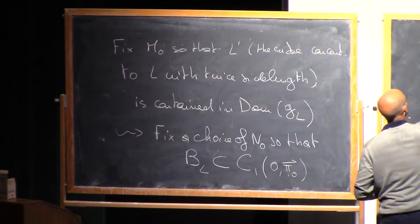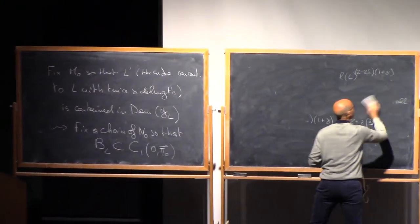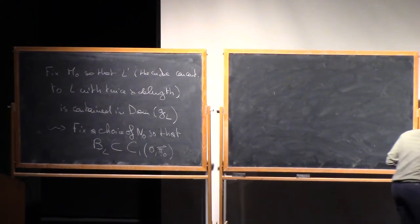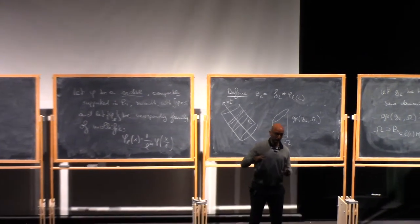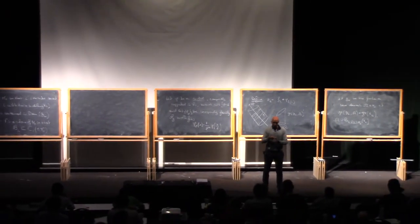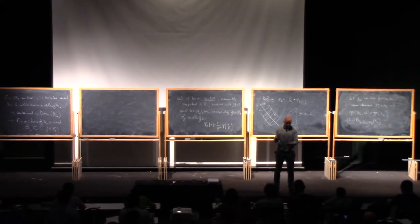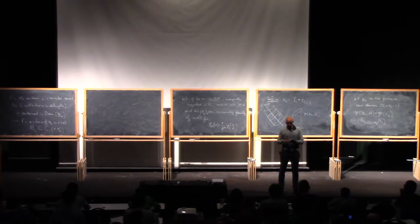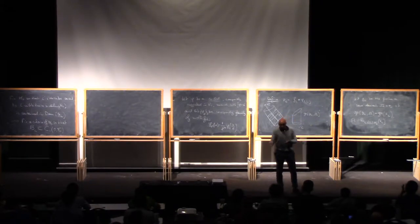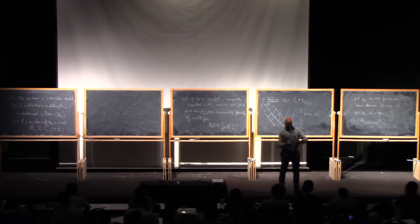So now, what do I do? I have these functions G_L, which are supposedly a good approximation of the original function. Why is this a good approximation? Because we used the Lipschitz approximation — which is close to the original function — and then we convolve with a radial kernel something which was almost harmonic. If it were harmonic, the mean value property would guarantee convolution keeps it exactly the same.